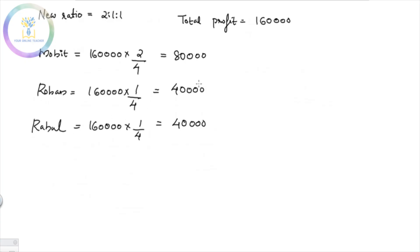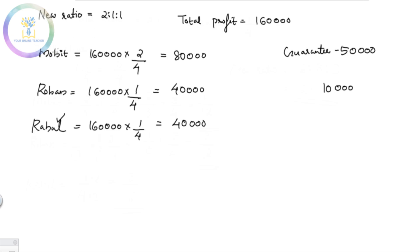But the question says Rahul must receive a minimum guarantee of 50,000. Rahul's calculated share is only 40,000, so there is a deficiency of 10,000. This deficiency must be borne by Mohith and Rohan in their old ratio of 2:1.